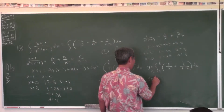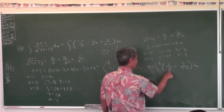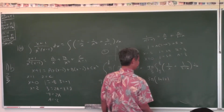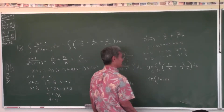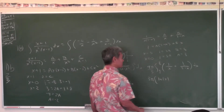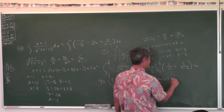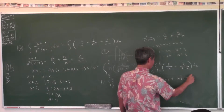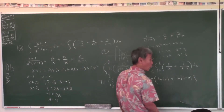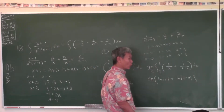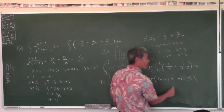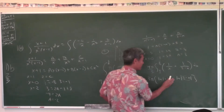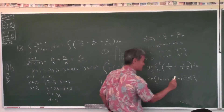So it becomes 3π times: the antiderivative of 1/X is just natural log |X|. What about 1/(3 minus X)? That's not just natural log |3 minus X|, because the derivative of the box is negative 1 — you have to adjust for it.